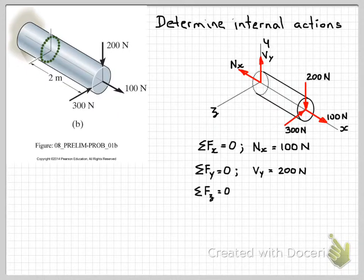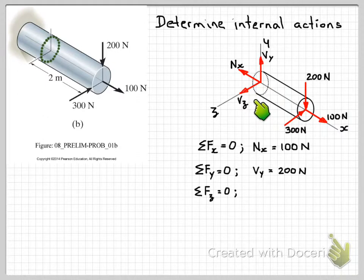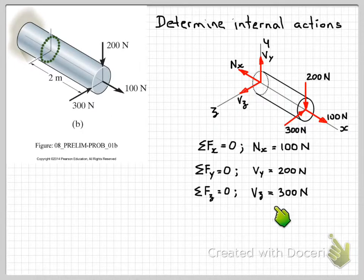Now we'll move on to the sum of forces in the z direction. We have just the one force — the 300 Newton force in the z direction. So at our internal section we must have a force equal and opposite to that. Again we have a shear force subscript z for the z direction, and Vz equals 300 Newtons.